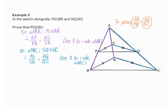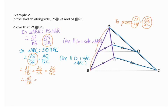If we now compare these two proportions, we will see that AS over SR appears in both of them, and we can then put all of it together to say that AP over PB is the same as AS over SR from the first proportion, but in the second proportion, AS over SR is the same as AQ over QC. And that means that AP over PB will also be the same as AQ over QC.